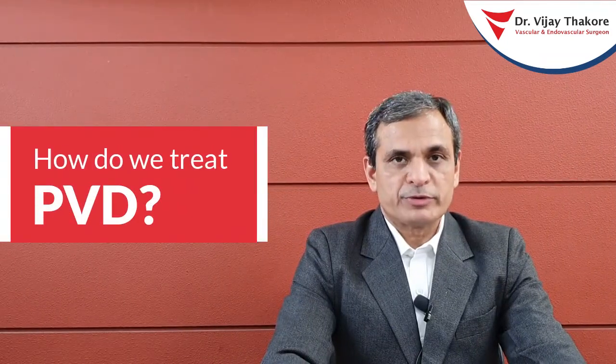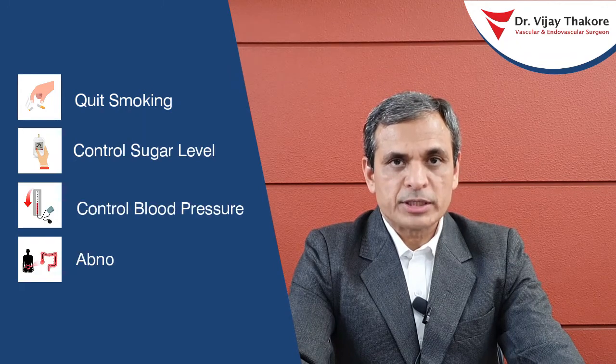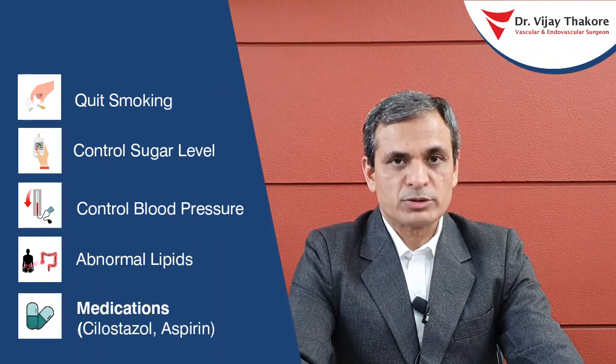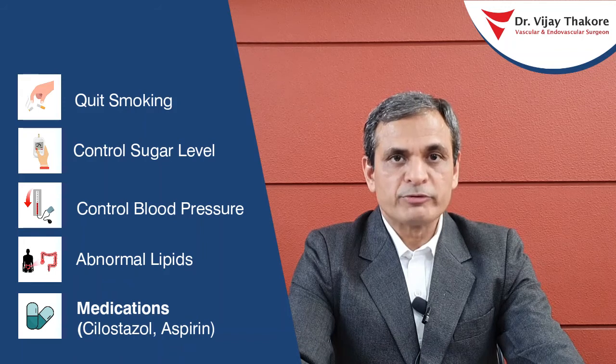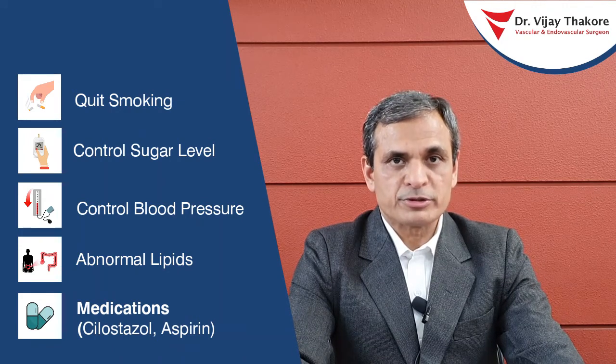How do we treat peripheral vascular disease? The objective of treatment is to improve blood supply to the leg and thereby offer symptomatic relief to the person. First and foremost is to control risk factors like smoking, achieve good control of sugars, blood pressure, and abnormal lipids. Along with this, certain medications like cilostazol certainly help in improving walking distance, and blood thinners like aspirin and clopidogrel can help. A newer drug called rivaroxaban is also used to prevent further progression of the disease.